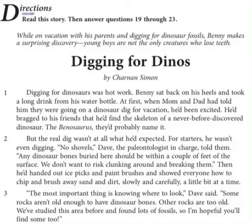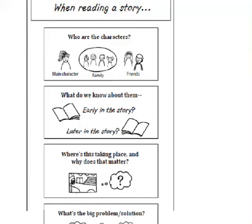I'm going to show you this chart. It says: when reading a story, these are the things you need to do. You need to think of who the characters are — the main character, and family and friends who are secondary characters. What do we know about them early in the story? What do we know about them later on in the story?